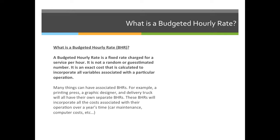Many things have associated budgeted hourly rates. For example, a printing press, a graphic designer, and a delivery truck will all have their own separate budgeted hourly rates. These BHRs incorporate all the costs associated with their operation over a year's time. So if we look at the delivery truck, we might charge $60 per hour to deliver printed goods. The $60 per hour is calculated by adding together everything the company would have to pay for that truck for the entire year — the driver's salary, the truck payment, truck insurance, maintenance, gas, etc. — all summed and then divided by the number of hours the truck is in operation.